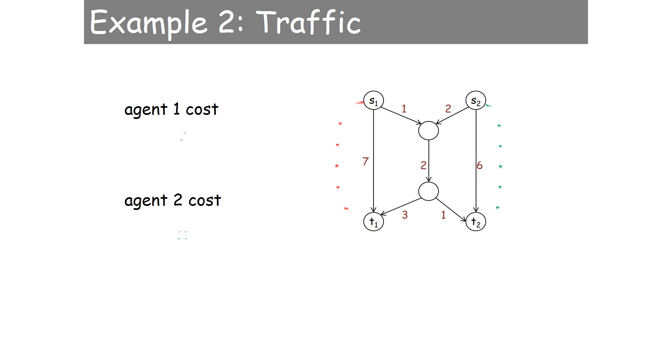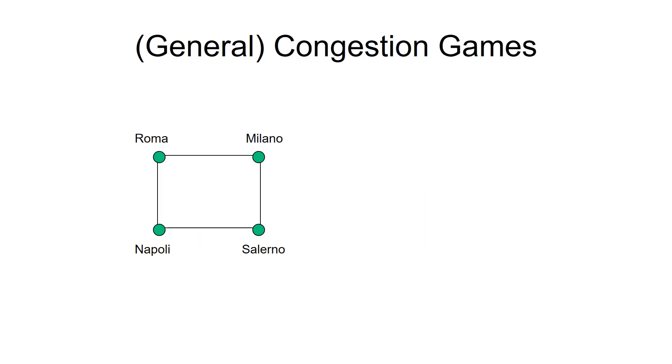So you see here, direct path is 7 and 6. One person using a shared path is 2 + 2 + 1. Now when two people are using the shared path, the cost becomes double. The path where both of them share becomes double, so we can understand probably what is the best way for both of them.